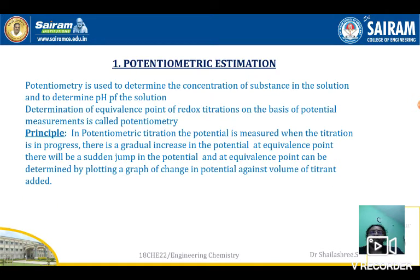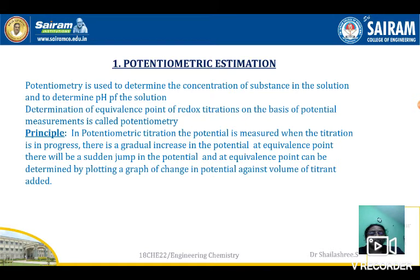Let us take the first experiment: potentiometric estimation. The aim is to find out the amount of FAS present in the given solution per litre. Potentiometry is used to determine the concentration of a substance in solution and also to determine the pH. Potentiometric titrations are of two types: acid-base titration, used in determination of pKa, and redox titration, used in determination of potentials.